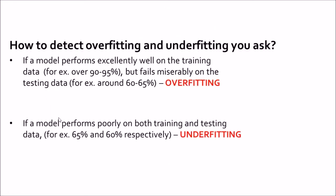If a model performs very poorly on both the training and testing data — for example, 65% on training and 60% on testing — then we are definitely underfitting because we have not managed to extract the whole information from the training data, meaning there is still scope for much more learning.